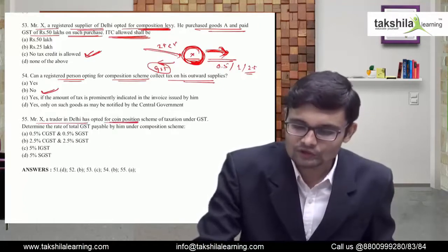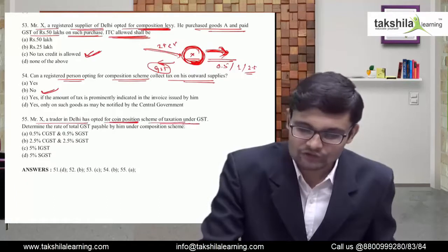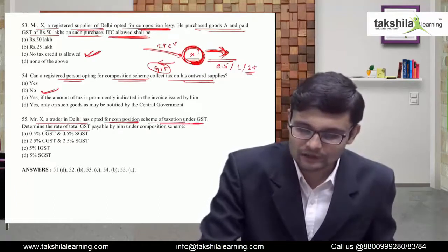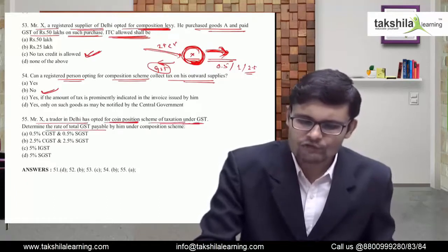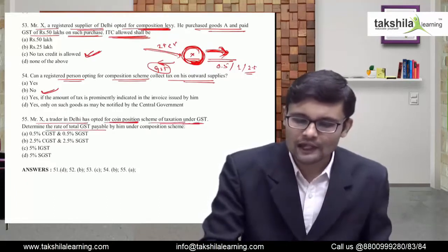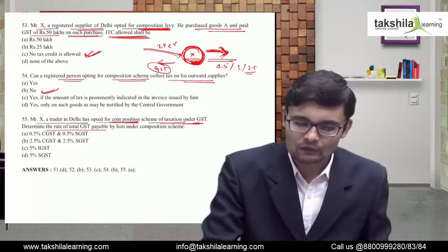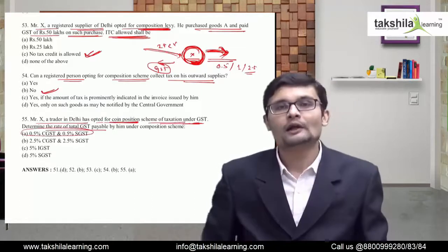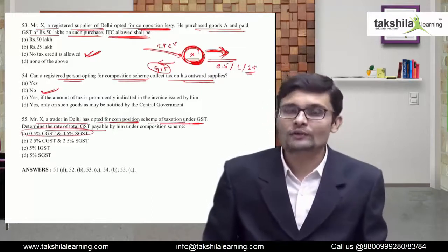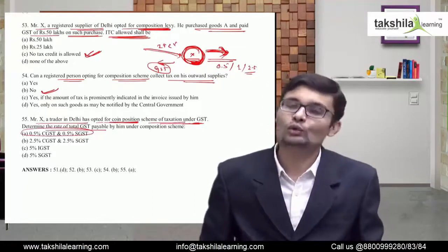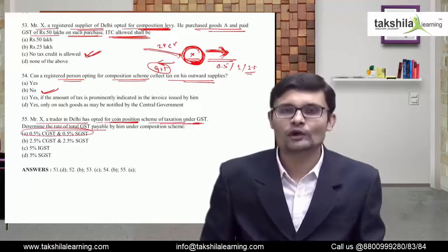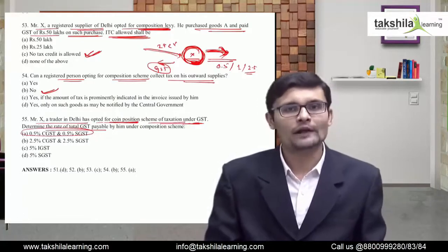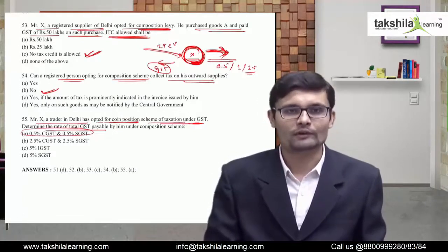Mr. X is a trader in Delhi who opted for the composition scheme under GST. Determine the applicable rate. If the person is a trader, the rate is 0.5% CGST + 0.5% SGST. If a restaurant or service supplier, it is 2.5% + 2.5%. For a manufacturer, it is 0.5% + 0.5%.